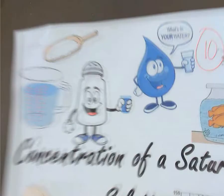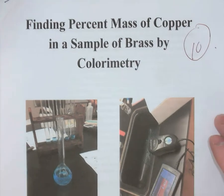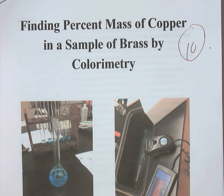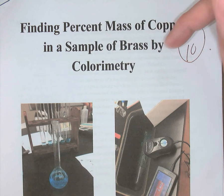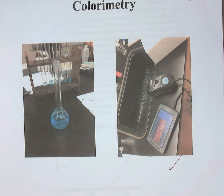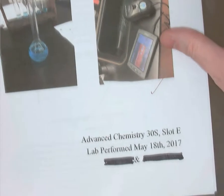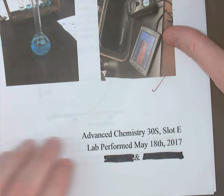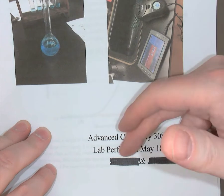Now let's look at a report from a grade 11 advanced chemistry class — which we do in grade 10 at Grant-Clark, so students in the very next year would have done this. This is from AP Chemistry: 'Finding the Percent Mass of Copper in a Sample of Brass Using Colorimetry.' Again, there's a descriptive title. They used photos they actually took during the experiment rather than images from the internet. Below the title: the course name, the slot, the date the experiment was performed, and the names of the two students — which I've blacked out. If writing independently, put your name first and your partner's name after.